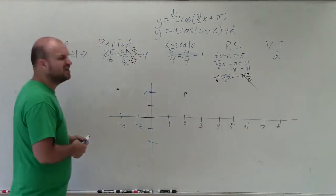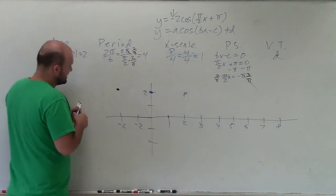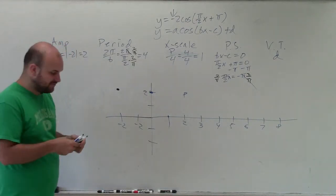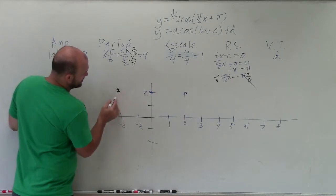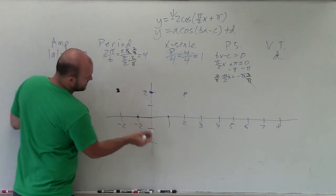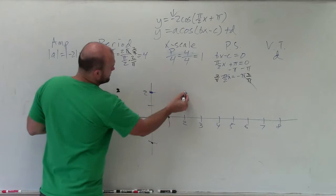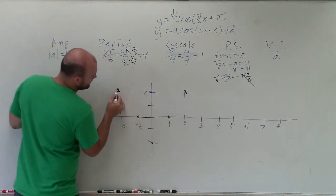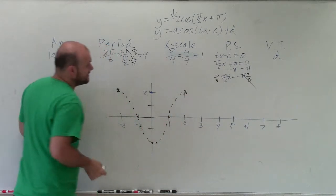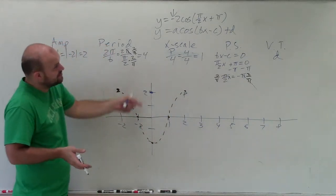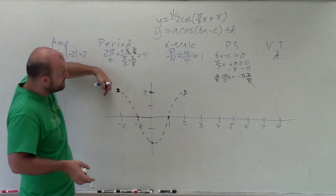So let's go ahead and graph this without the reflection first, and then we'll see how that works. So without the reflection, I have my top, intercept, minimum, intercept, top. Actually, we'll just do one period. So it looks something like this. That would be exactly one period with an amplitude to a phase shift of negative 2, and so forth.